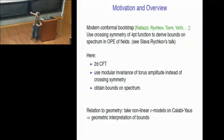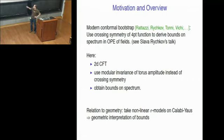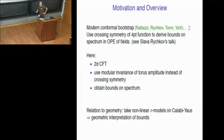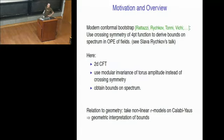To compare my talk to Slava Rychkov's approach: one difference is that I'll only talk about two-dimensional conformal field theories. The second difference is that Slava and friends used crossing symmetry of the conformal four-point functions, whereas what we're going to use here is the modular invariance of the torus vacuum amplitude of our conformal field theory. The big advantage here is that quite a lot is known mathematically about modular invariance, so we can use a lot of well-developed mathematical tools. But the goal is exactly the same — just like Slava and friends, we would like to obtain bounds on the spectrum of the theory.